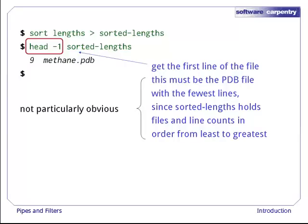Even once you understand what wc, sort, and head do, all those intermediate files make it hard to follow what's going on. How can we make it easier to understand?